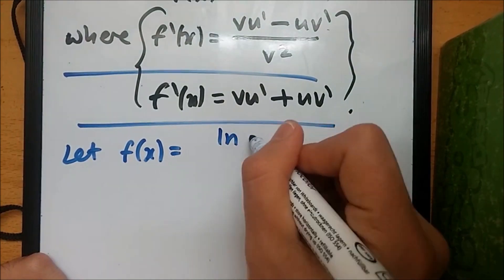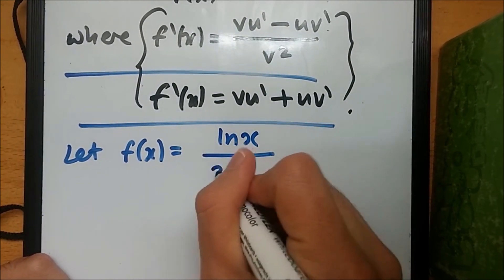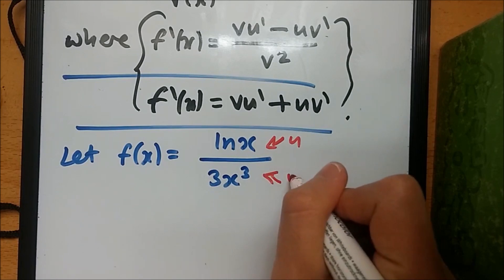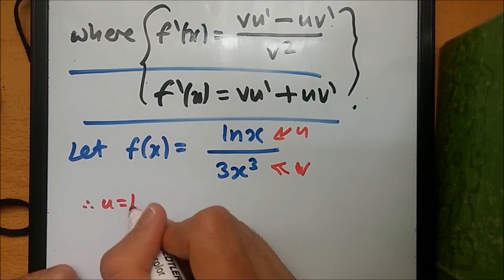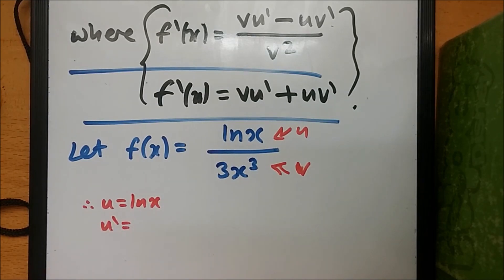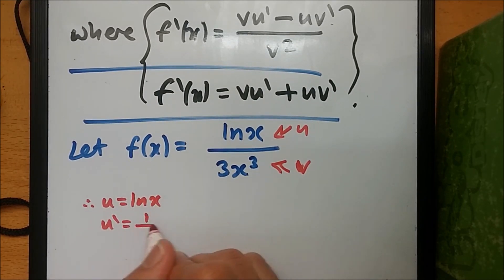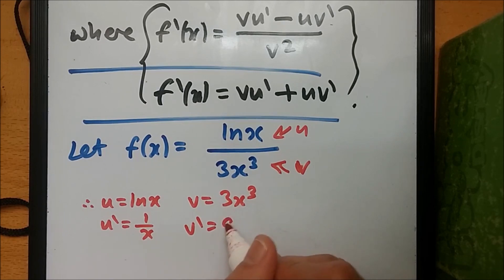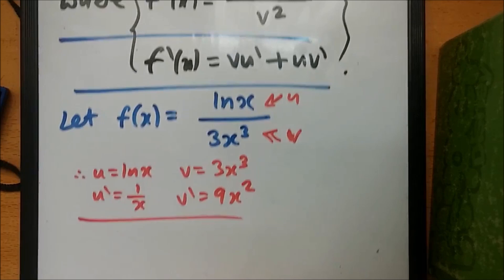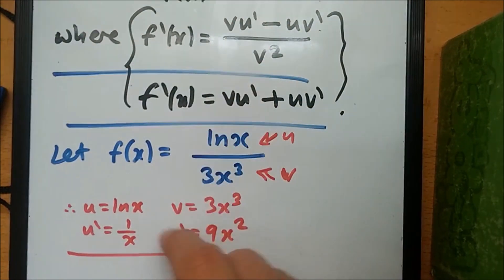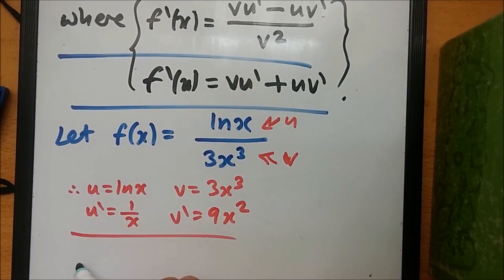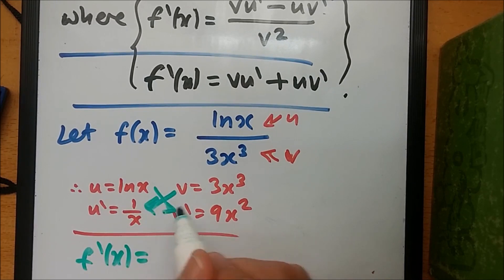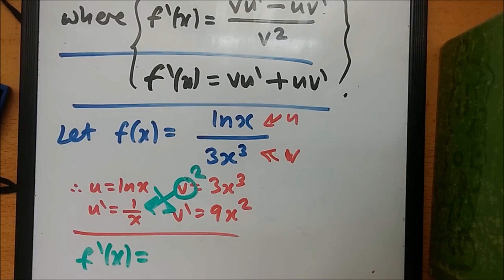Let f(x) equal log(x) over 3x cubed. The numerator is u and the denominator is v. So u equals log x, and therefore u prime equals 1/x. And v equals 3x cubed, so taking the first derivative — drop the power down and multiply — v prime equals 9x squared. Now we substitute into the quotient rule formula.